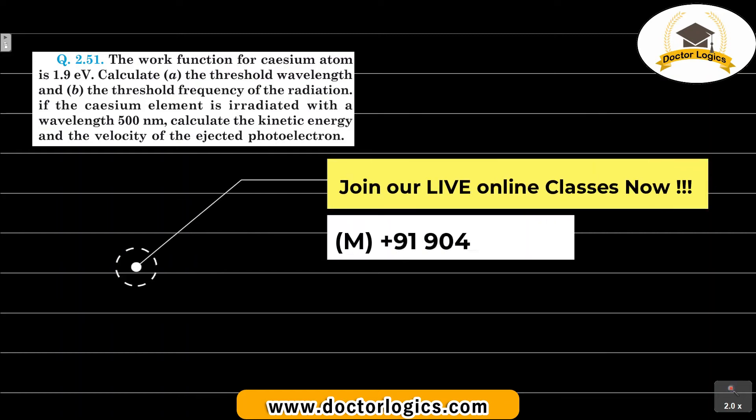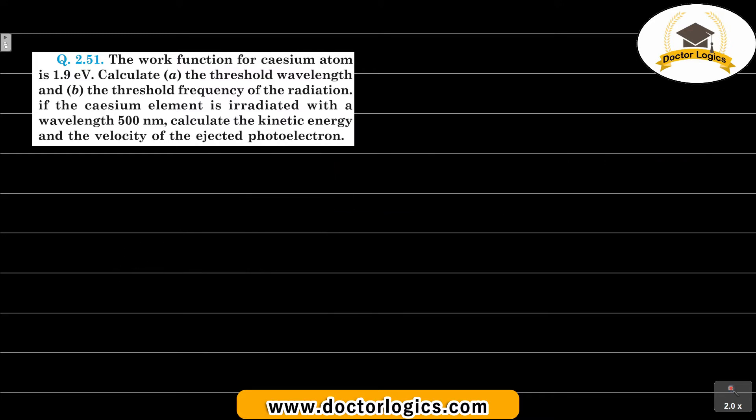Hello dear students, welcome to Dr. Logics. Today's video we will discuss this question: the work function for the cesium atom is 1.9 electron volts. The work function is provided as 1.9 electron volts, which will be 1.9 into 1.6 into 10 to the minus 19 joules.